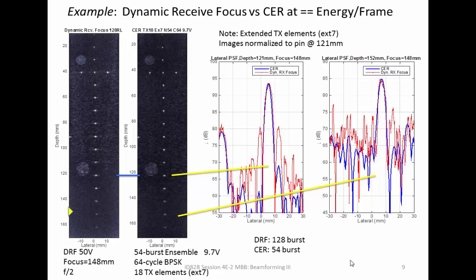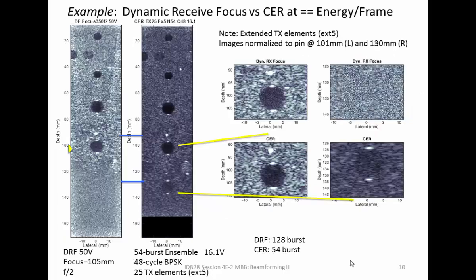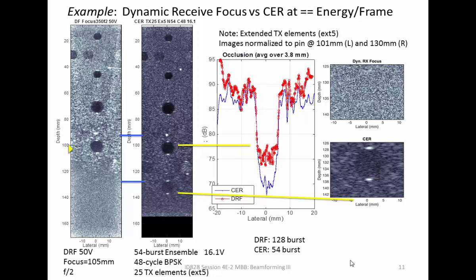We see at least 20 dB suppression of side lobes compared to dynamic receive focus. Looking at a phantom image, comparing dynamic focus to coded excitation reconstruction, we get about 6 dB better contrast resolution inside the void. And the dynamic focus doesn't even pick up a deeper void at all. Comparing to synthetic transmit aperture with conventional pulses, in the near field we get the same main lobe response, confirming it focuses everywhere as synthetic transmit aperture should.